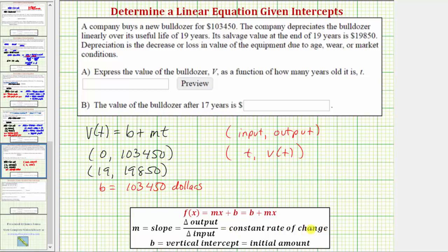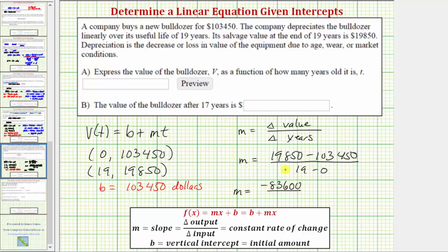And now, to determine the constant rate of change, which in this case would be the amount of depreciation per year, we need to determine the change in the value divided by the change in the number of years. So, for this situation, the change in the output divided by the change in the input is equal to the change in the value divided by the change in the years. To find the change, we'll take the values from the second ordered pair and subtract the values from the first ordered pair. So, the change in value is going to be 19,850 minus 103,450 divided by the change in the number of years is 19 minus zero. So, m is equal to negative 83,600, divided by 19, which is equal to negative 4,400. So, m is equal to negative 4,400, and the units would be dollars per year.